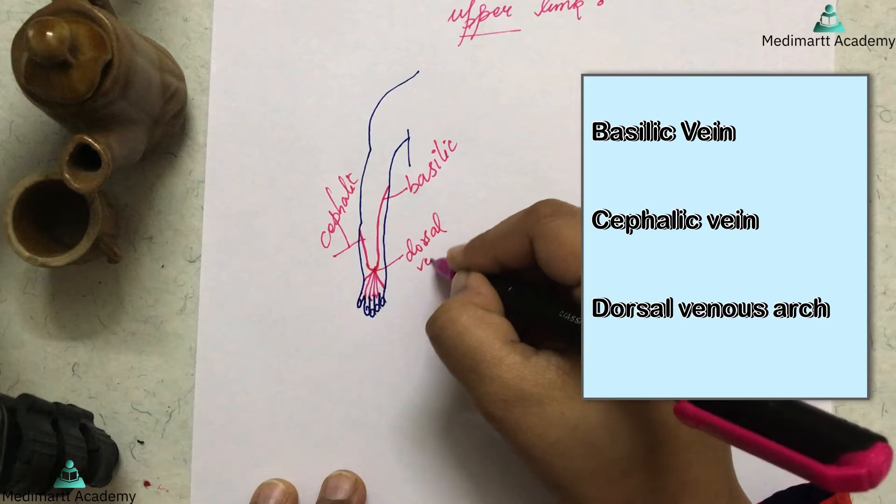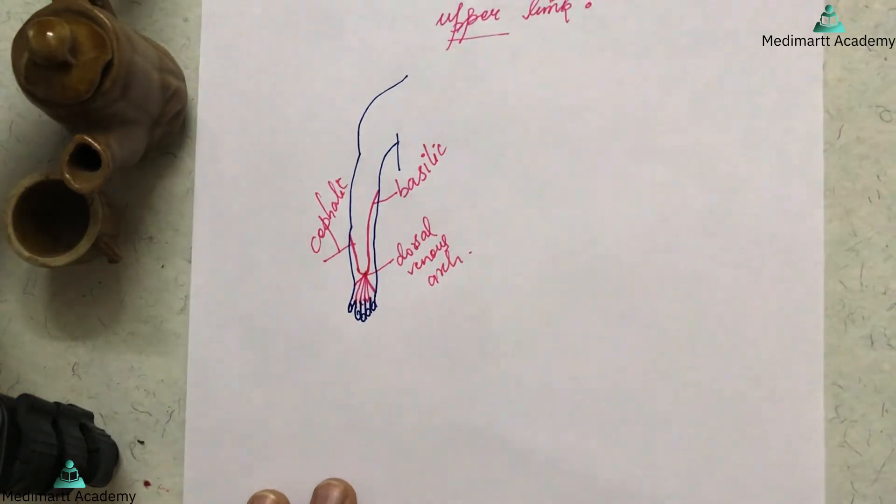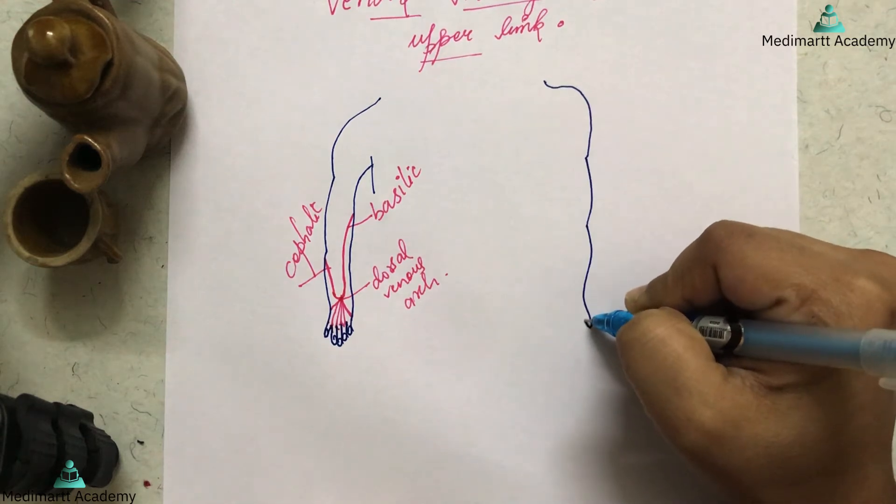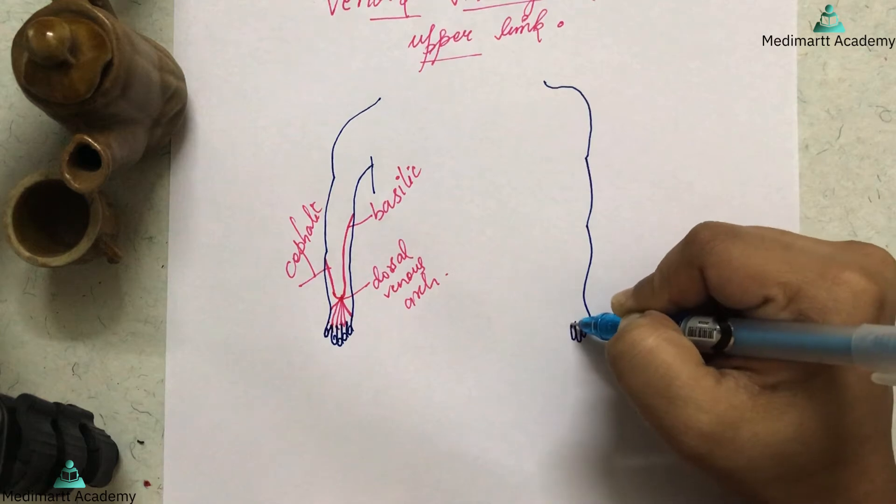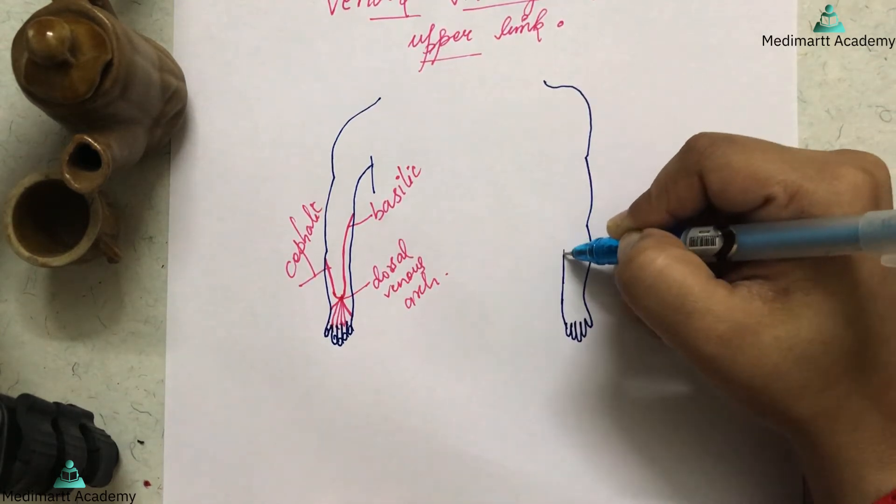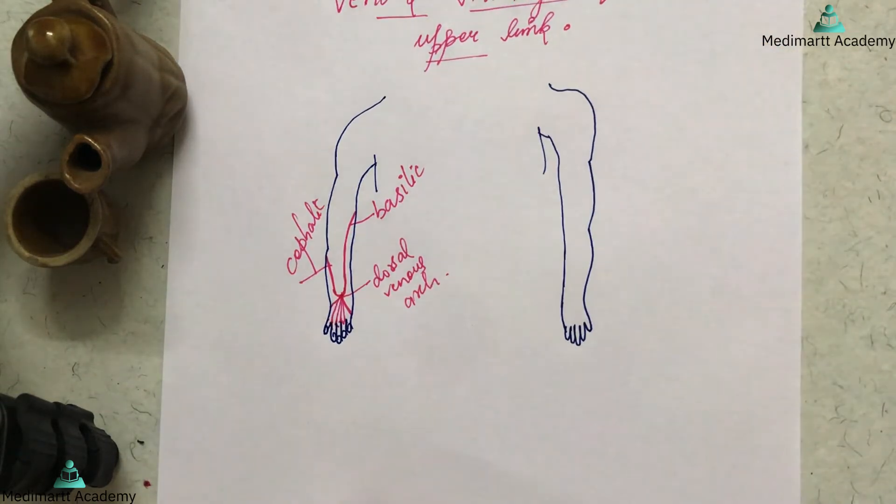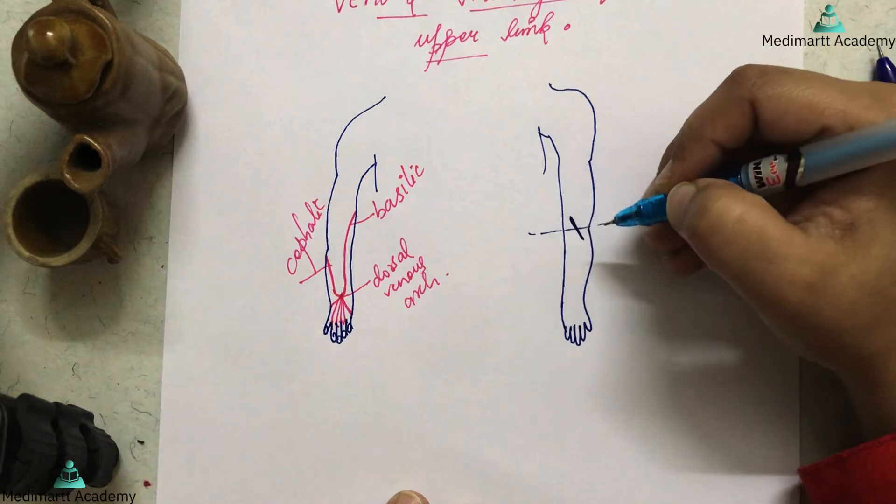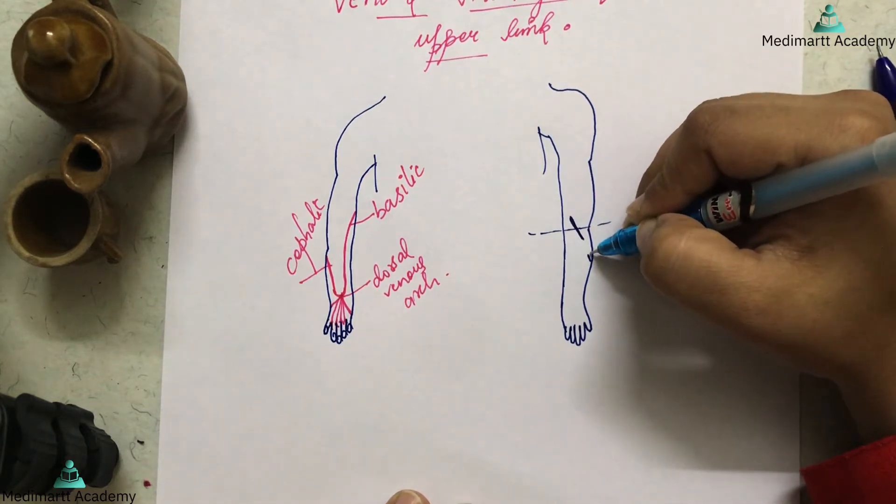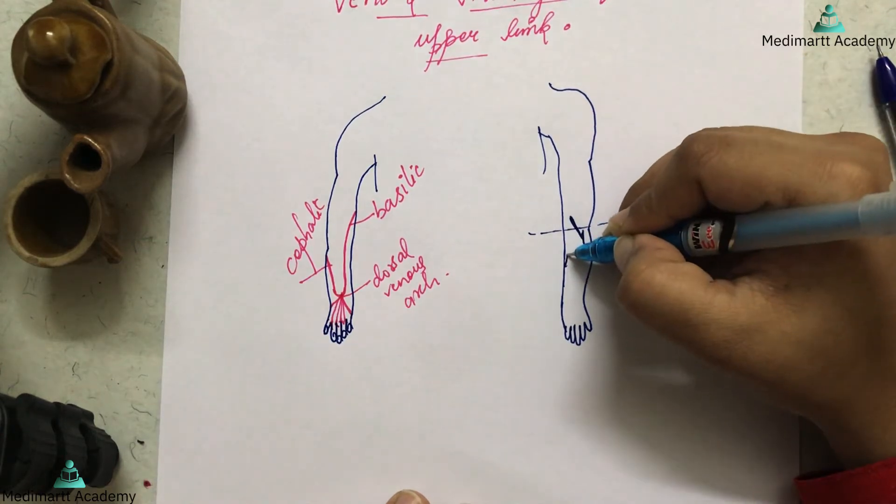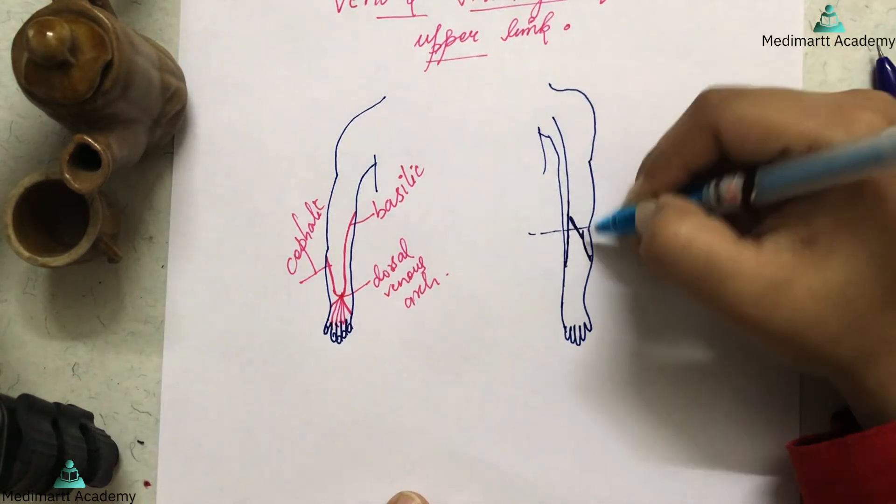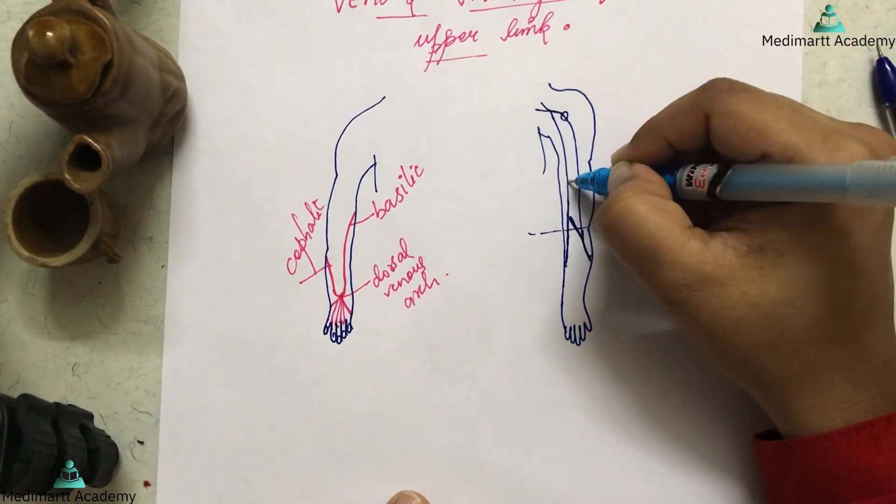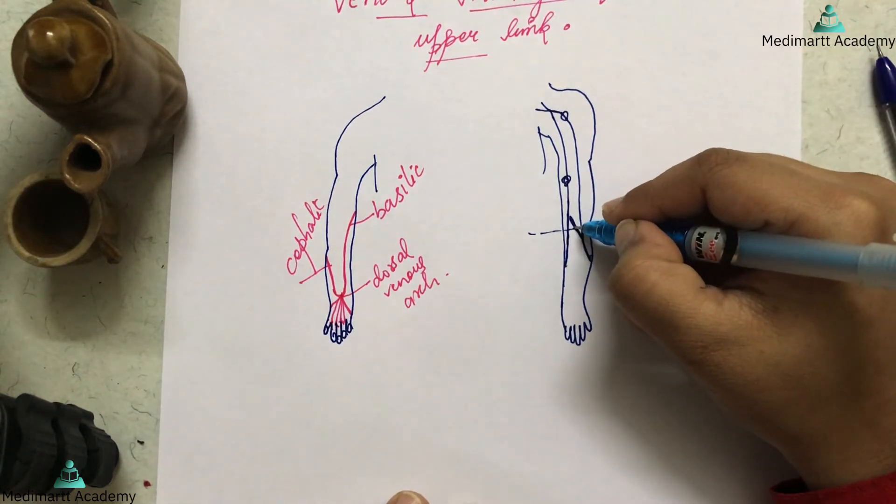This vein is the basilic vein and this is the cephalic vein. Now I'm going to draw the veins. This is a quick diagram. This is your hand. Suppose this is your bend of the elbow. First, draw your median cubital vein medially upwards. One vein from here starts and goes upward like this. They finally drain into the axillary vein. This is the median vein of the forearm.